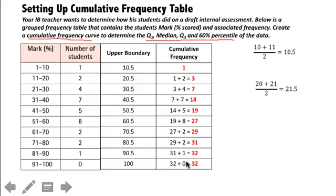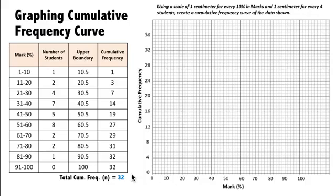And this last number right here, this 32, that's the total frequency, which we'll call n for the purpose of this particular lesson. So our total cumulative frequency, n, is 32. So once you finish your table so that you have an upper boundary column and a cumulative frequency column, you are ready to start graphing.